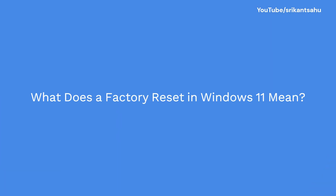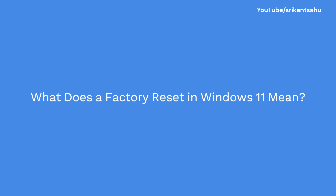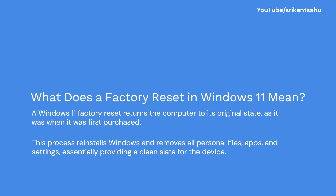So what does a factory reset mean in Windows 11? A factory reset in Windows 11 restores the operating system to its original clean state by reinstalling Windows. It removes system changes, third-party apps, and in some cases all your personal data, depending on the reset method you choose.